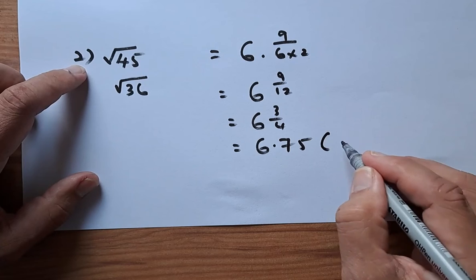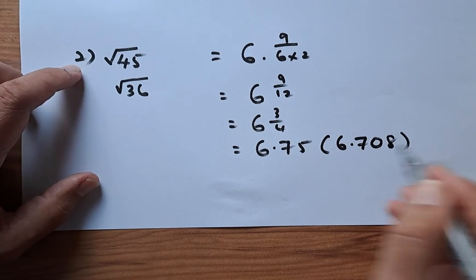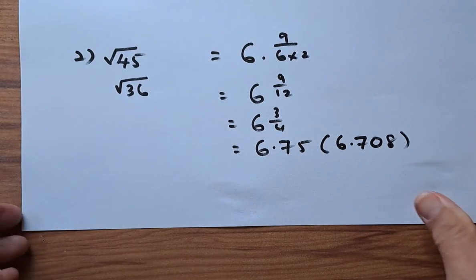So I've checked the calculator. The answer was 6 point 708, which is a bit off but it's still quite a good estimate.